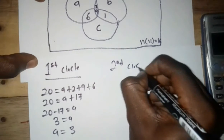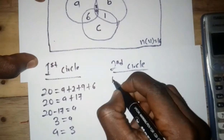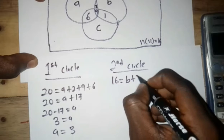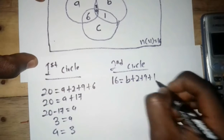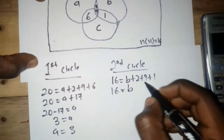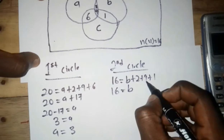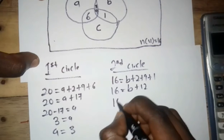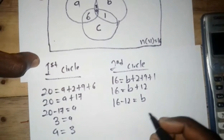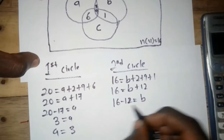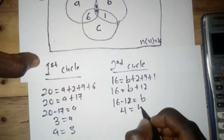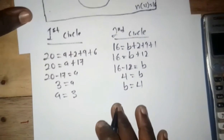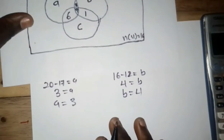Now the second circle — hockey. We have: 16 = b + 2 + 9 + 1. So 16 = b + 12. Therefore b = 16 − 12 = 4.